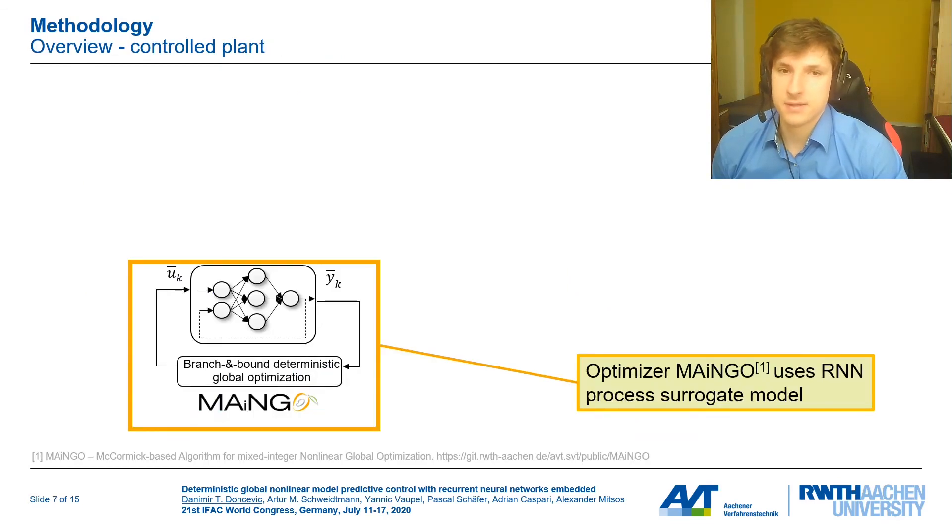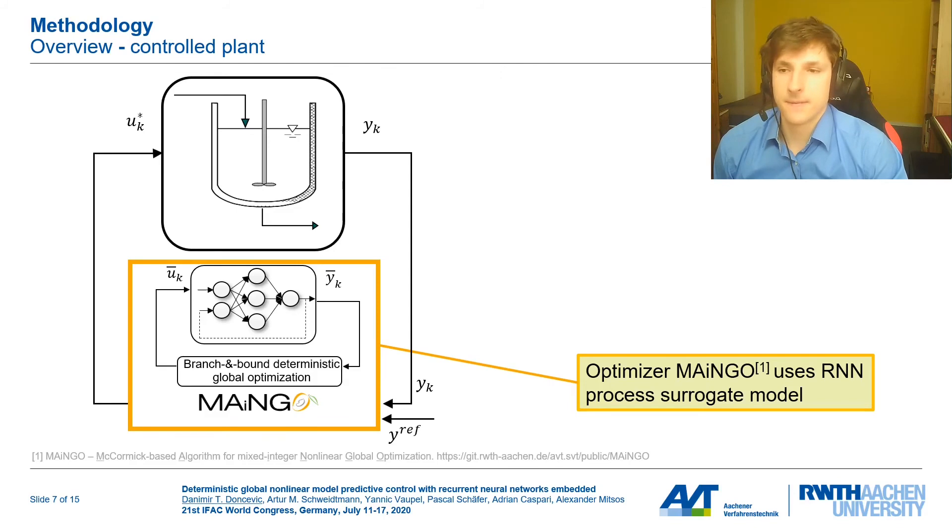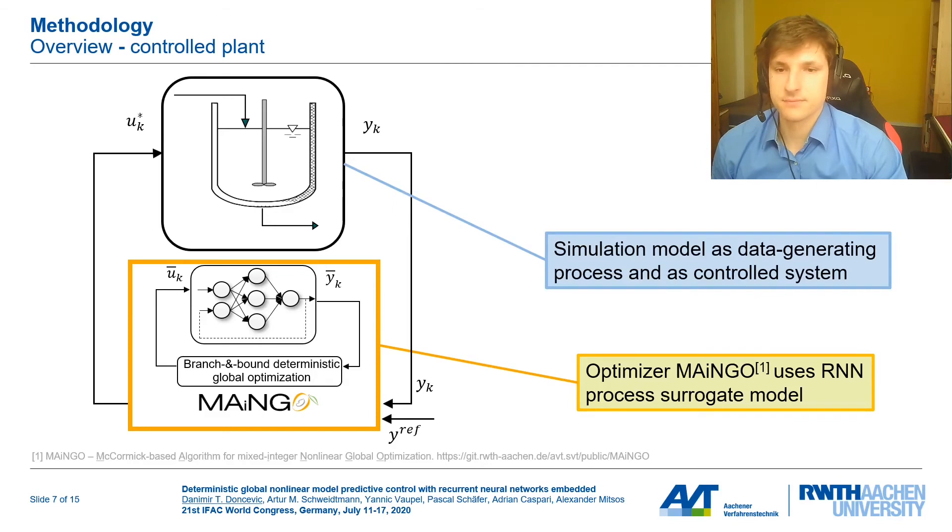Okay, so far I have explained exactly what happens inside the optimizer, in this orange box right here. As the optimizer in this work, we use our in-house solver MAGo for global optimization. MAGo is built on using McCormick relaxation propagation to build these convex underestimations of functions. Now we're going to apply this as the model predictive controller to a case study, where we use a simulation model of the process as both the control system and the data generating process which yields the training data for our RNN. If you're interested in details regarding the training of RNNs, you can find them in the conference paper that belongs to this talk.